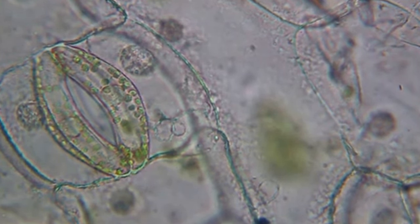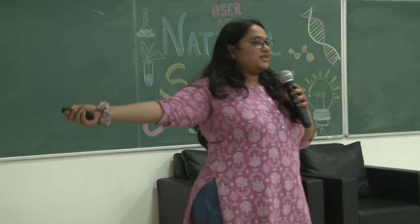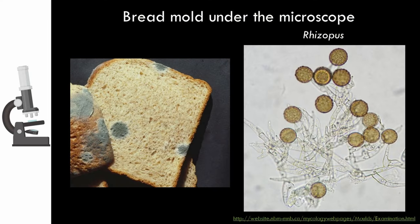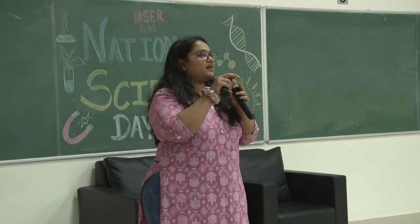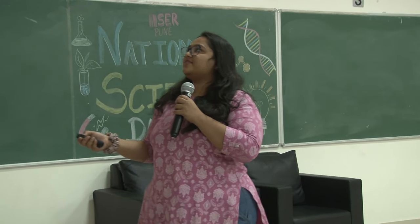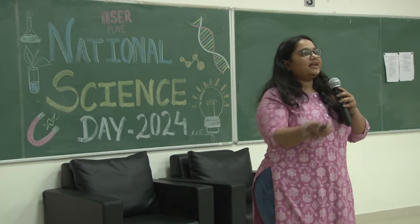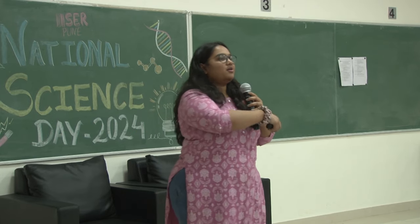Another common thing we see is bread mold — you've seen this, right? You leave bread out for a long time and fungus grows on it. From the outside it looks like a green patch that keeps on growing, but the organism which causes this doesn't look like that from outside. Under the microscope, bread mold looks something like this — it's caused by a fungus called Rhizopus. What we see are sac-like structures called conidia which contain the spores of the fungus. Spores, like seeds of plants, move through the air and settle at different places to grow.